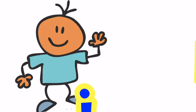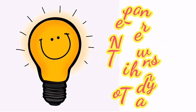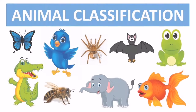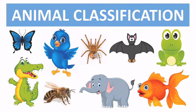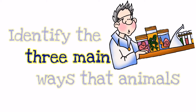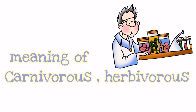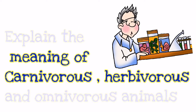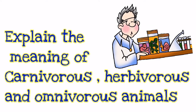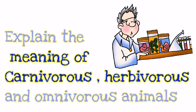Hi, welcome back to Learn New Things. Today's topic is all about animal classification. At the end of this video, you will be able to: number one, identify the three main ways that animals are classified; and two, explain the meaning of carnivorous, herbivorous, and omnivorous animals.